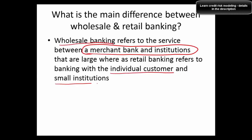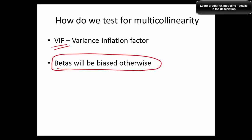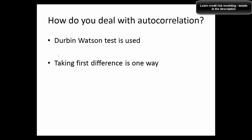Now for econometrics and statistical modeling questions. How do we test multicollinearity? Check the variance inflation factors (VIF) and ensure they don't exceed the benchmark. If ignored, beta estimates will be biased, making the model unreliable. How do we deal with autocorrelation? First, check for its presence using the Durbin-Watson test. One way to remove autocorrelation is to take the first difference of the variables.